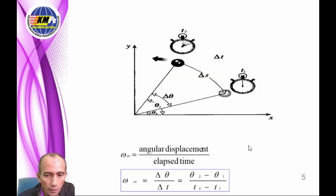Average angular velocity: omega equals angular displacement over elapsed time, where delta theta over delta t equals theta₂ minus theta₁ over t₂ minus t₁.